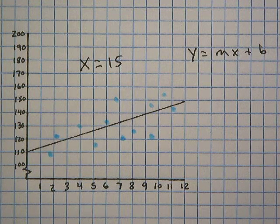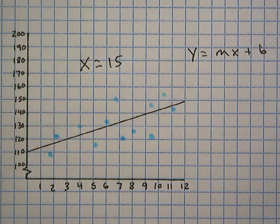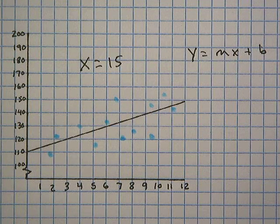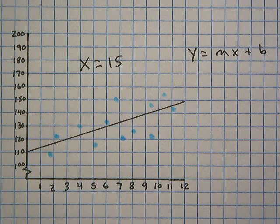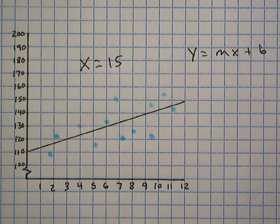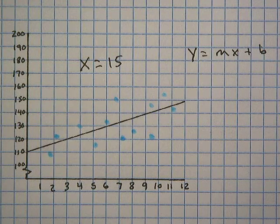For today's video, we're going to use the trend line on a scatter plot to make a conjecture about a point that's not on the scatter plot. A conjecture is an opinion or conclusion formed on the basis of incomplete information. So it's kind of like a hypothesis in science.